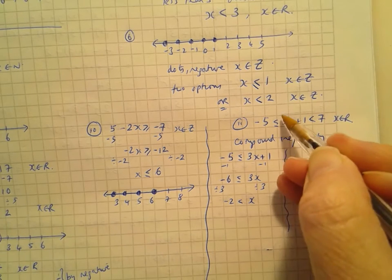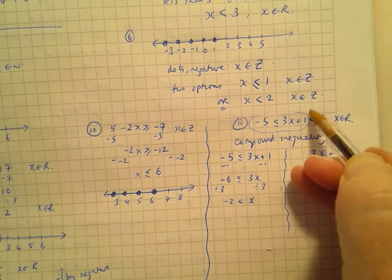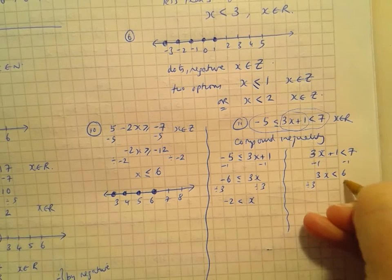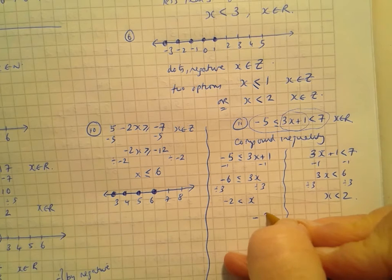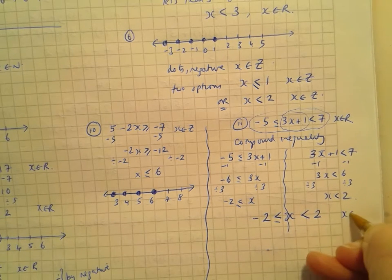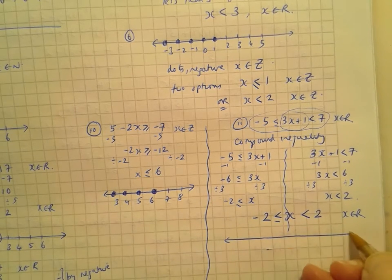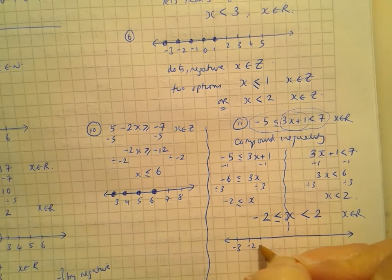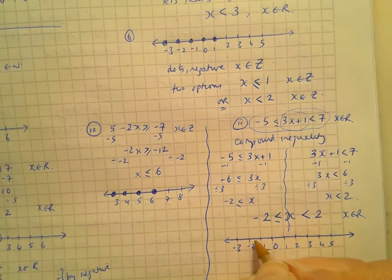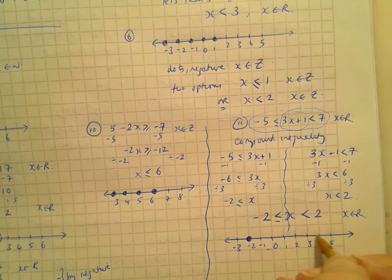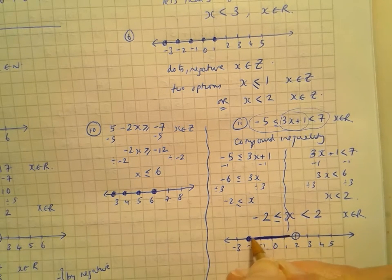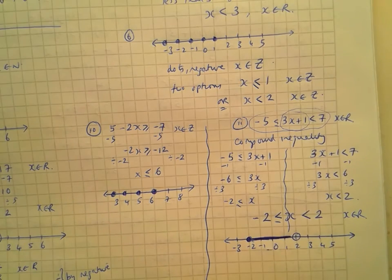Example 8: 5x + 7 < 17, x ∈ R. Subtract 7 from both sides, then divide by 5: x < 2. Draw the number line with 2 in the middle. Since x ∈ R, put an empty circle around 2 and shade to the left as a solid line — a road showing all real numbers less than 2.